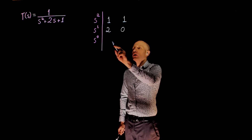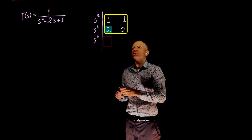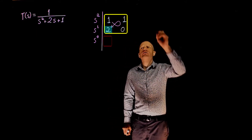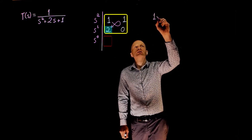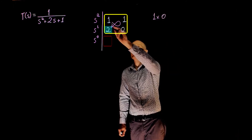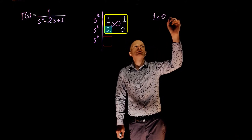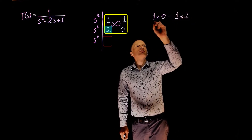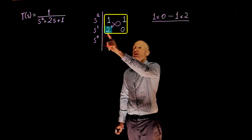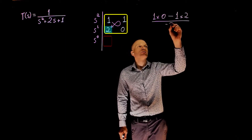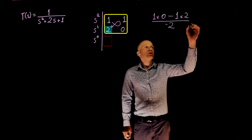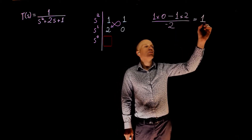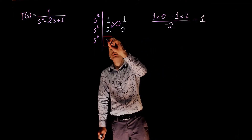Now we only have one element to find. We can find it using cross multiplication: 1 times 0, minus 1 times 2, divided by the negative of the last element, which is negative 2. This gives 0 minus 2, divided by negative 2, which is positive 1. So the element we calculated here is 1.